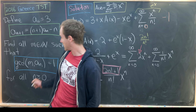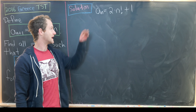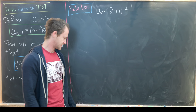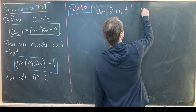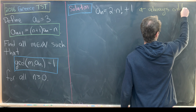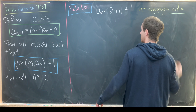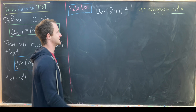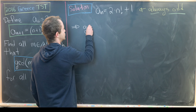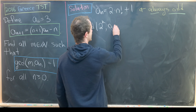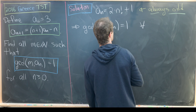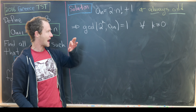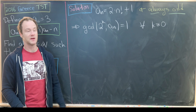Now let's use this closed form to finish the problem. We have aₙ = 2·n! + 1. First, notice that this number is always odd: 2 times something is even, plus 1 is odd. That tells us that gcd(2ᵏ, aₙ) = 1 for all k ≥ 0 and all n ≥ 0 — so all powers of 2 are relatively prime to every value of our sequence.